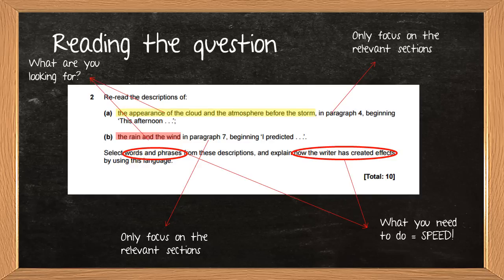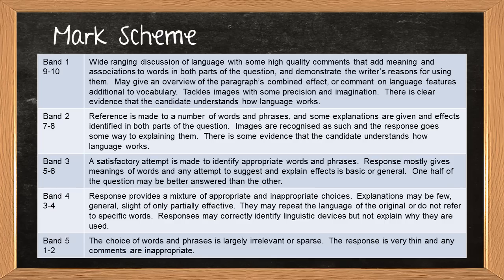From the question, we know that all you need to be doing is picking out words and phrases. So you're looking for the language devices, and then you're looking at how has the writer created this effect. Basically what they want from this question is a really nice, focused language analysis. The easiest, simplest way to do that is to follow the formula of SPEED.